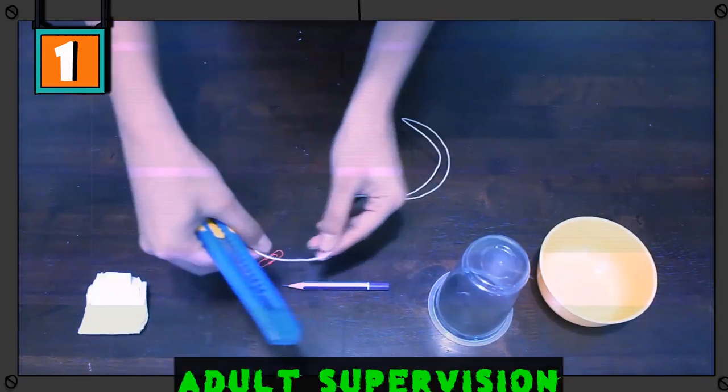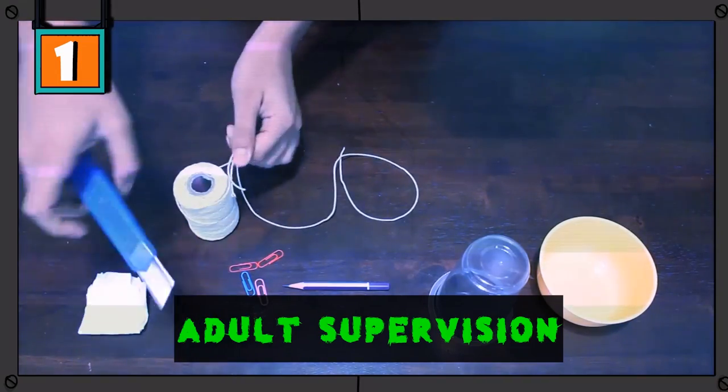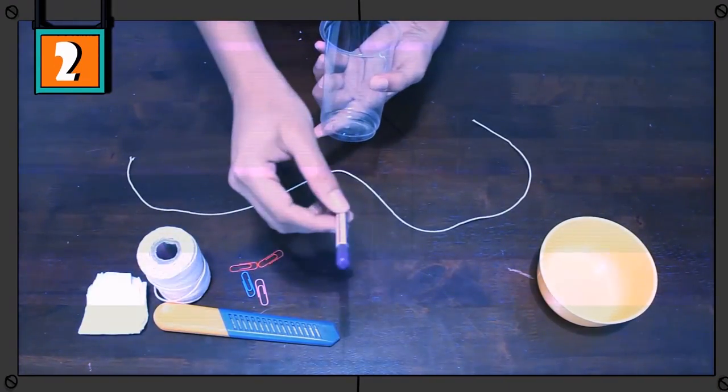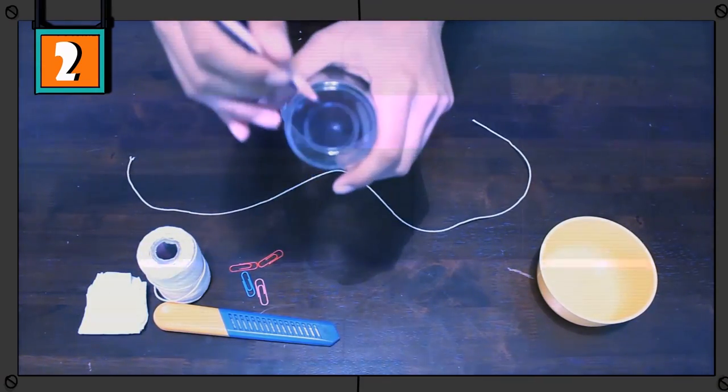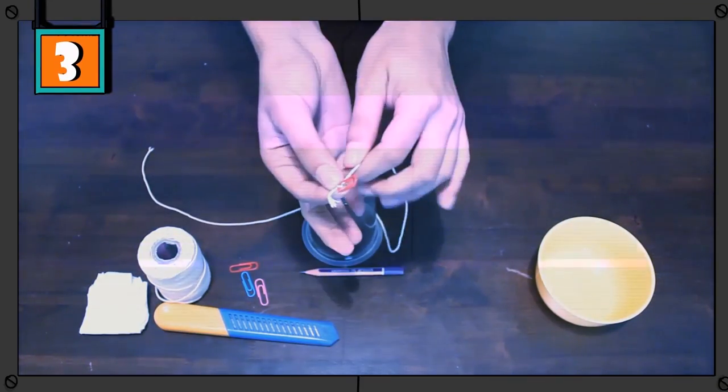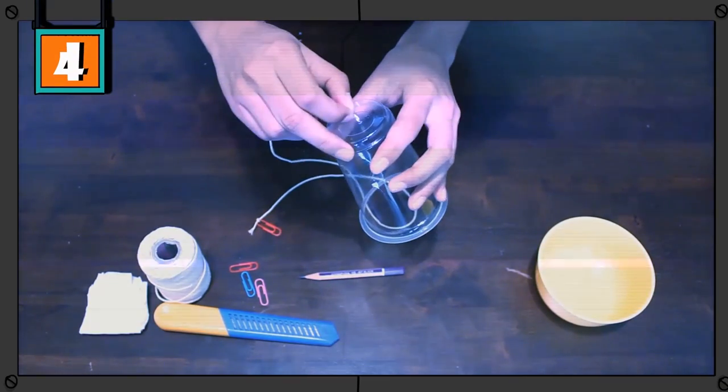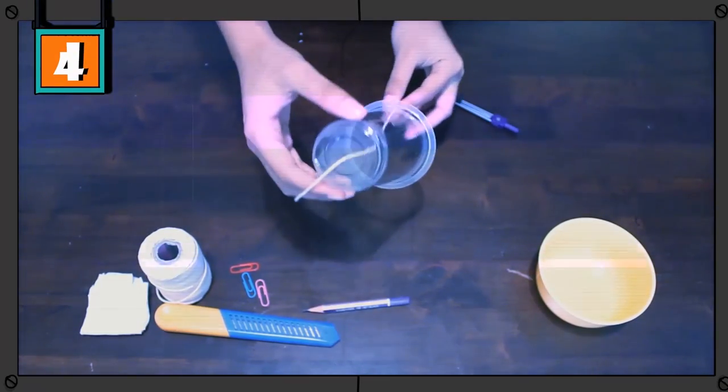Cut a piece of cotton to about 40 centimeters in length. Take a cup and use a pencil to push a hole in the center of the bottom. Tie one end of the cotton with a paper clip, push the other end through the hole, and pull it through.